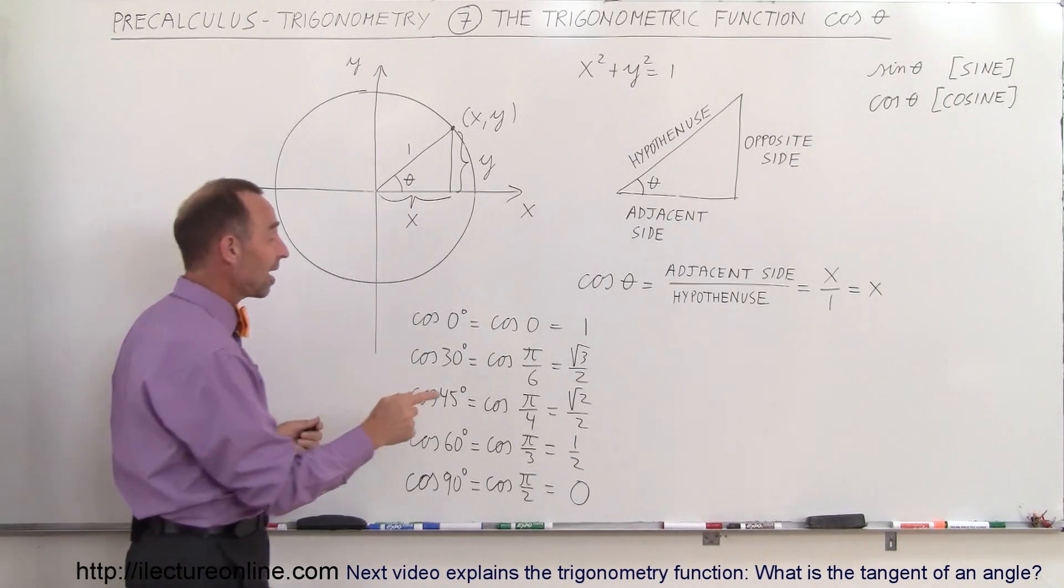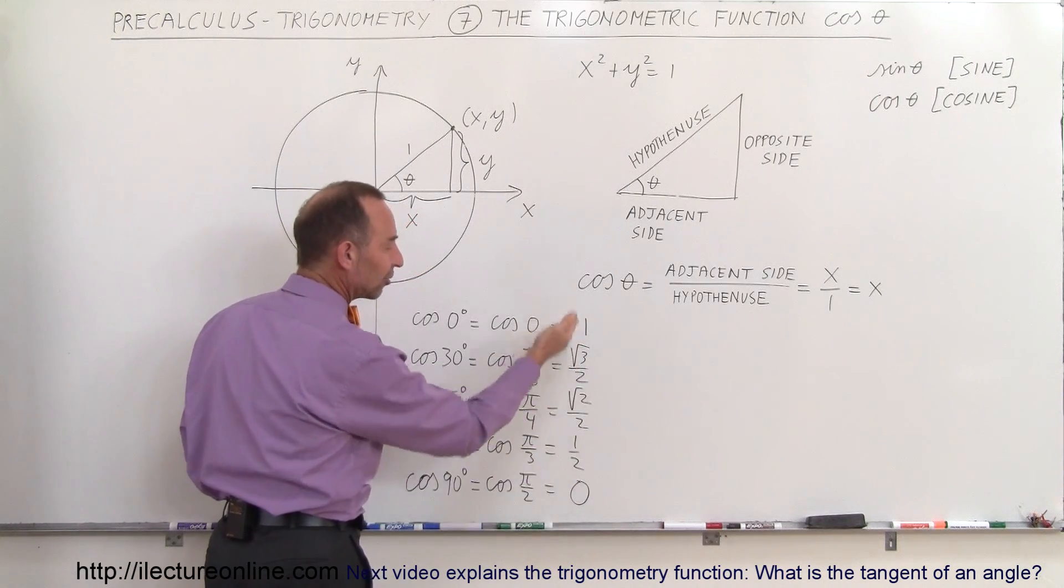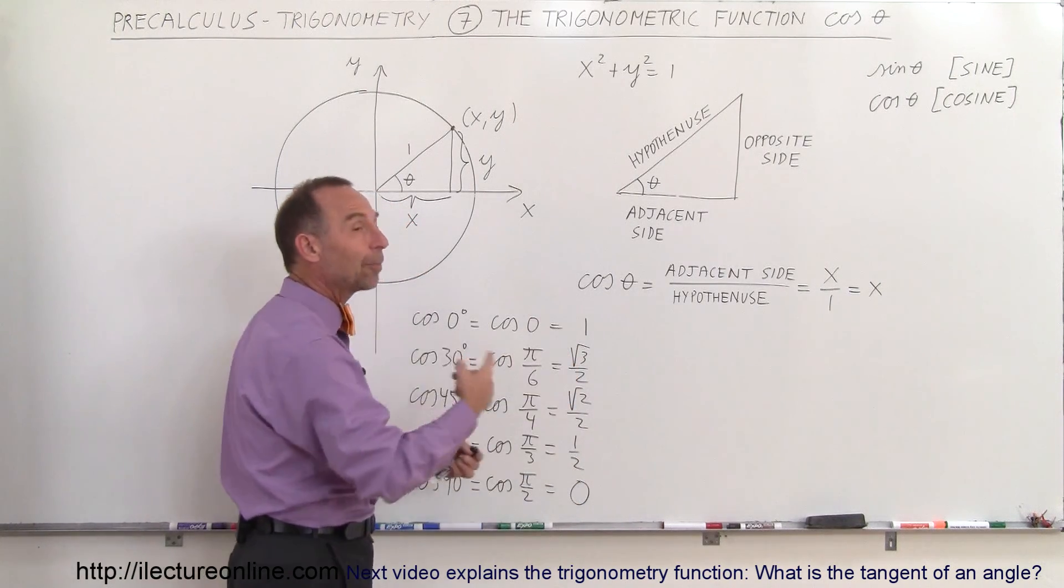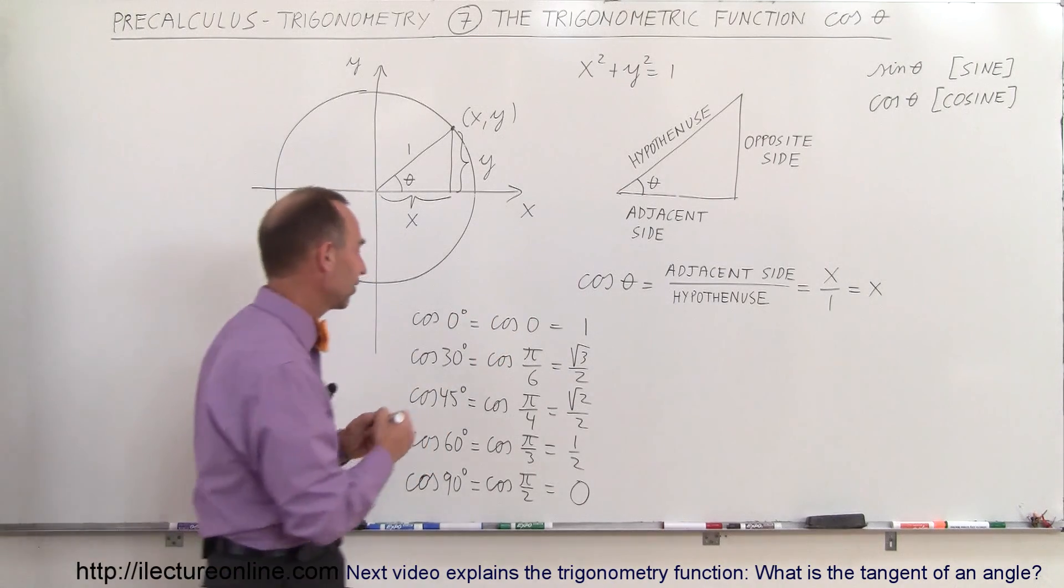Remember, with the sine, the sine of 0 degrees was 0, and the sine of 90 degrees was 1, and the values in between are the same, just in the opposite direction. So just for reference, let's put the values down for the sine on the right side here.